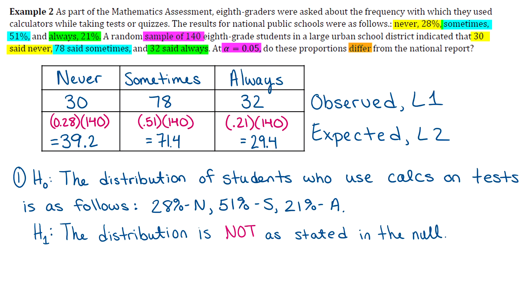Now we do have to figure out which one is our claim. So we're trying to answer the question, do these proportions differ? So does the distribution from the sample differ from the national report? So that would match what the alternative is saying, that the distribution is not as stated in the null. So we'll label the alternative as the claim.